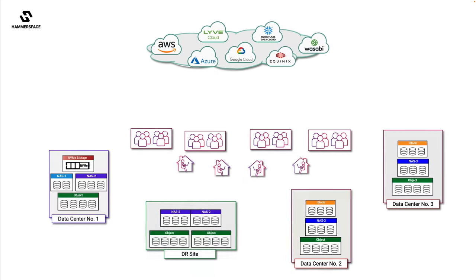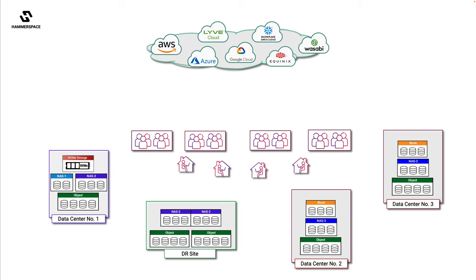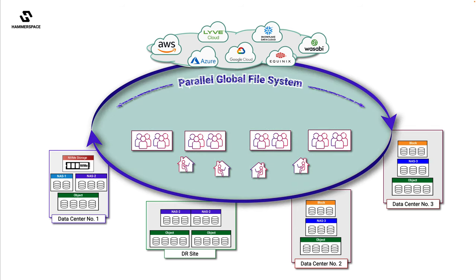To solve these problems, Hammerspace software aggregates all existing storage silos into a shared, high-performance parallel global file system. In this way, it creates a seamless vendor-neutral environment that spans all storage types and locations, including the cloud.